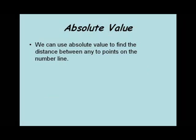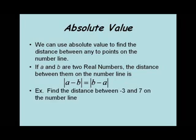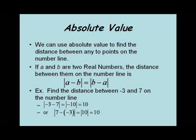We can also use absolute value to find the distance between any two points on the number line. If a and b are two real numbers, the distance between them is the absolute value of a minus b, which also equals the absolute value of b minus a. For example, the distance between negative 3 and 7: the absolute value of (negative 3 minus 7) equals the absolute value of negative 10, which equals 10. Reversing the order, the absolute value of (7 minus negative 3) equals the absolute value of 10, which also equals 10.